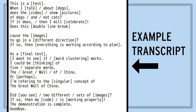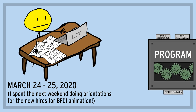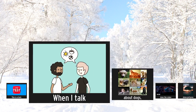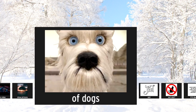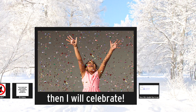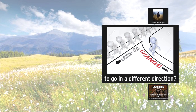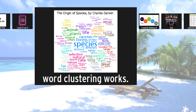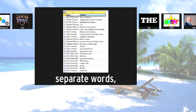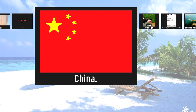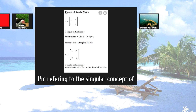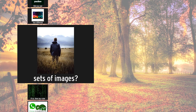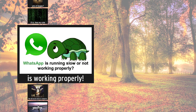Take a look at the transcript. You don't need to read the whole thing, but try to get an idea of what we are looking for. Ready? Okay, now let's see what the video-making machine gives us. 'This is a test. When I talk about dogs, does the video show pictures of dogs and not cats? If it does, then I will celebrate. Does this double line break cause the images to go in a different direction? If so, then everything is working according to plan. As a final test, I want to see if word clustering works. I could be thinking of five separate words: The Great Wall of China, or perhaps I'm thinking of the singular concept of The Great Wall of China. Did you see two different sets of images? If so, then my code is working properly. The demonstration is complete. Goodbye.'